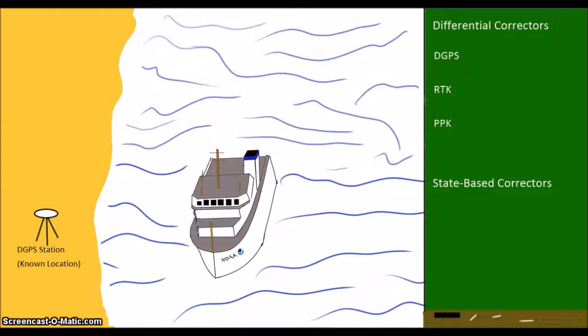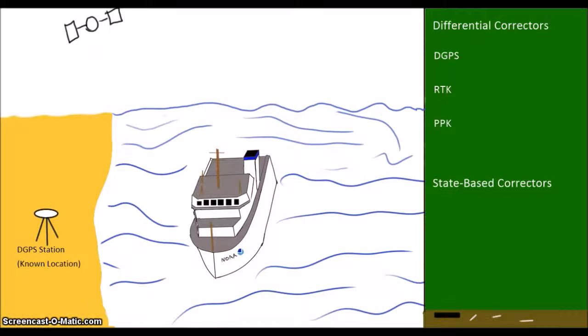A state-based approach tries to make a better estimate about the entire configuration of the GPS system, including all of the various error sources. That is, we try to understand the state the GPS system is in. WAAS, PPP, and various commercial satellite corrector services are state-based approaches. We're going to cover a bunch of acronyms here, but we'll be keeping track as we go and hopefully make some sense of all of this.